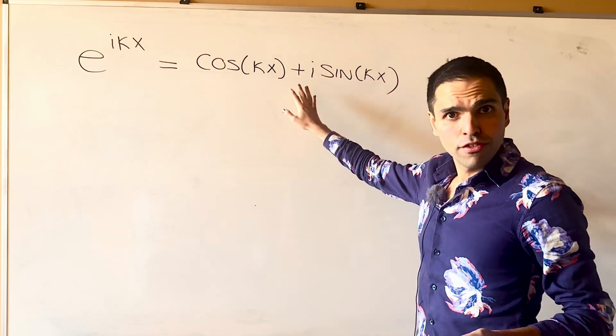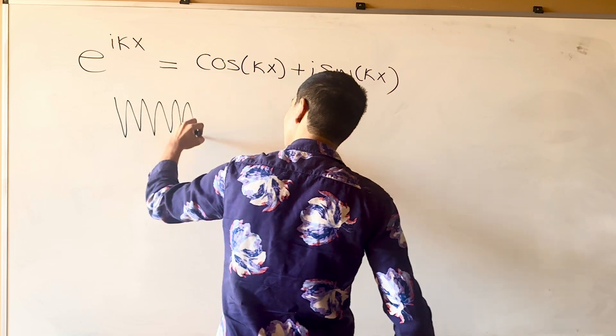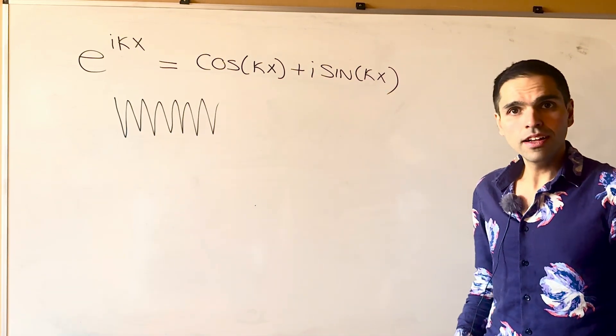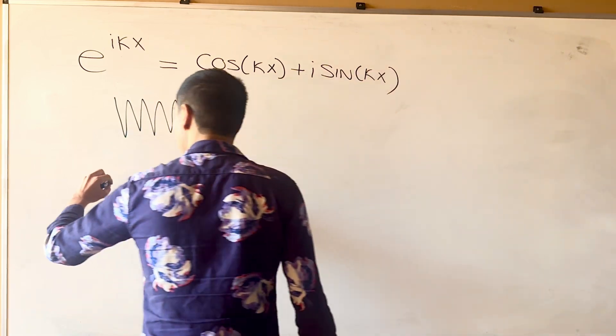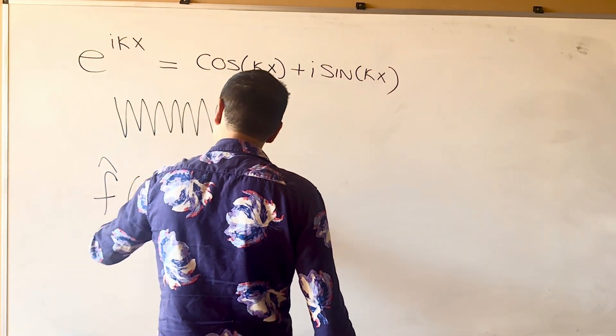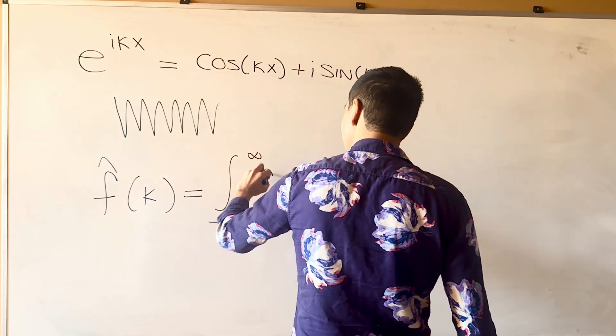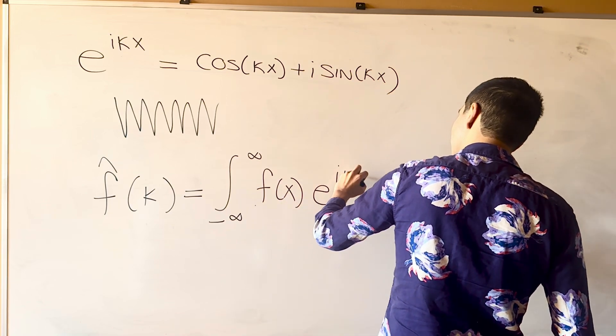And, again, all you have to visualize is this being very squiggly functions, but in the complex world. So, without further ado, what is the Fourier Transform? Well, f hat of kappa is the integral from minus infinity to infinity of f of x, e to the i kappa x dx.